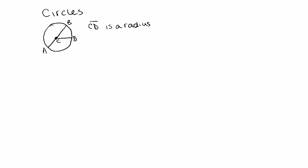A radius is a segment that has one endpoint at the center of the circle and another endpoint on the circle.